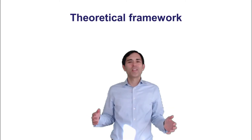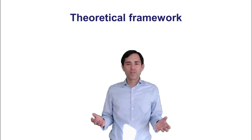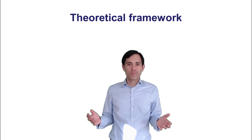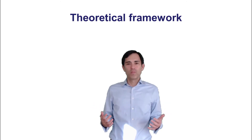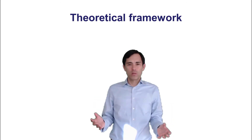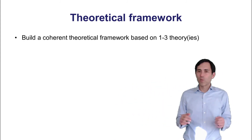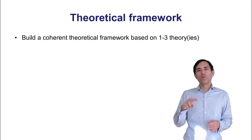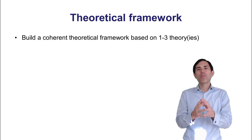Let me talk a bit more about deductive papers. Most of the articles I review for the journals where I'm an editor are quantitative papers. In quantitative papers, you would usually develop theory and test theory. What most authors typically do is propose a theoretical framework. What is extremely important is to build a coherent theoretical framework — based maybe on one, two, or three theories. The important point is a coherent framework: if you use two theories, these two theories should be integrated into one theoretical model.